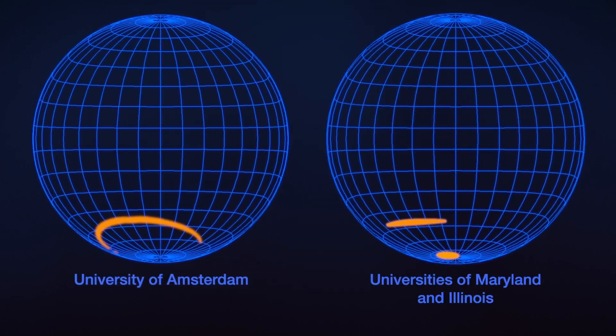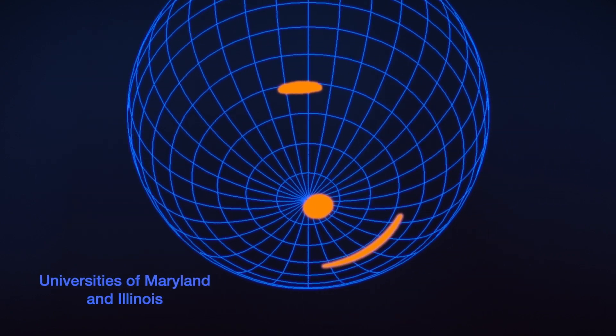The other team, led by researchers at the Universities of Maryland and Illinois, finds two oval hot spots. Their sizes, shapes, and locations closely match those derived from the other model.